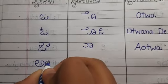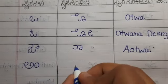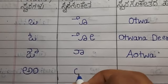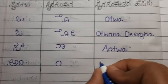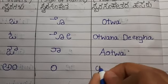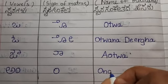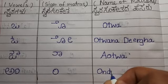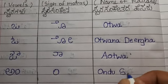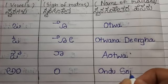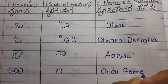Am. Am is equals to Vandusunne. The Matra of Am is Vandusunne.